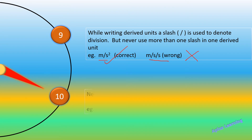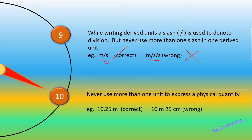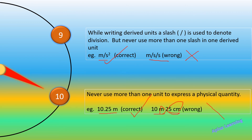The next rule: never use more than one unit to express a physical quantity. For example, instead of writing '10 meter and 25 centimeter', the correct form is '10.25 meter'. Please never write two separate units for one quantity. Only one unit should be used, so '10.25 meter' is the correct form.